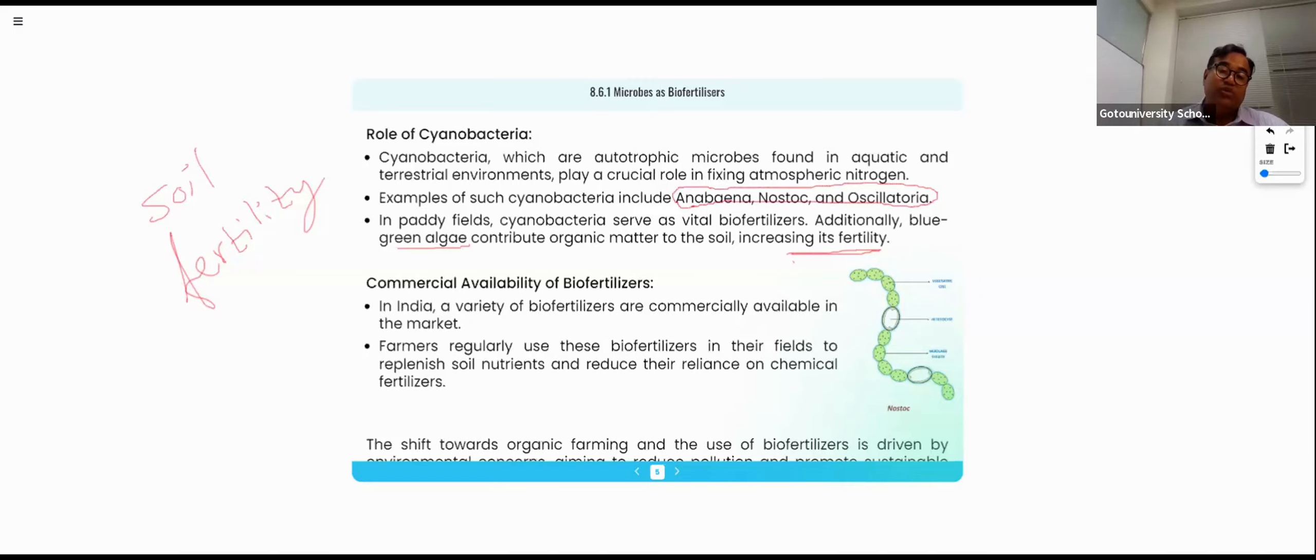This Anabaena and Oscillatoria we can grow in the ditch water. We can grow in the waste water very easily. Without any type of massive human labor cost. So these bio-fertilizers, whatever we are preparing that we are using in the soil and then we are making plenty of nutrients out of this bio-fertilizer. So these are the important things we need to understand.